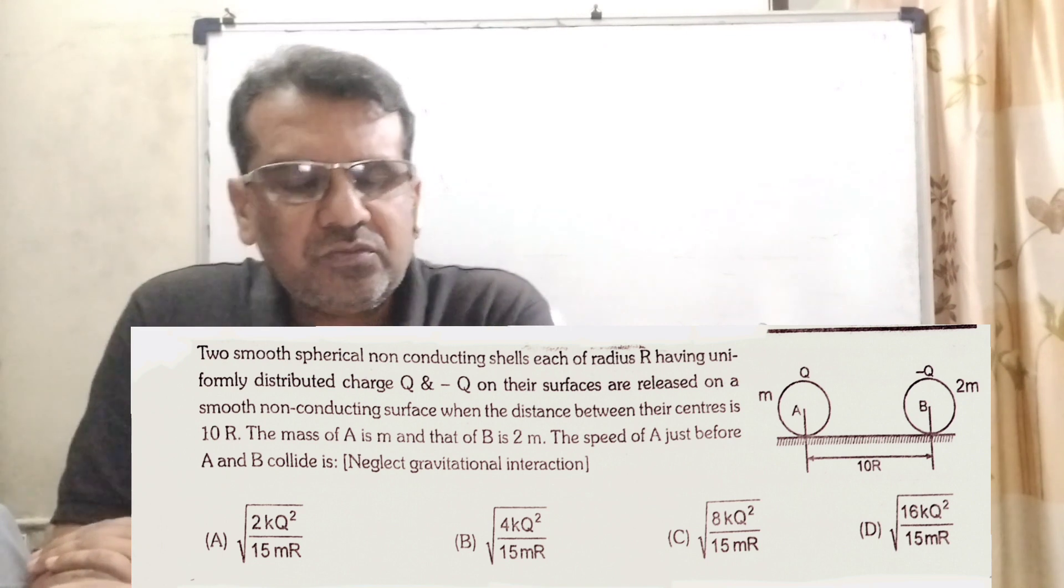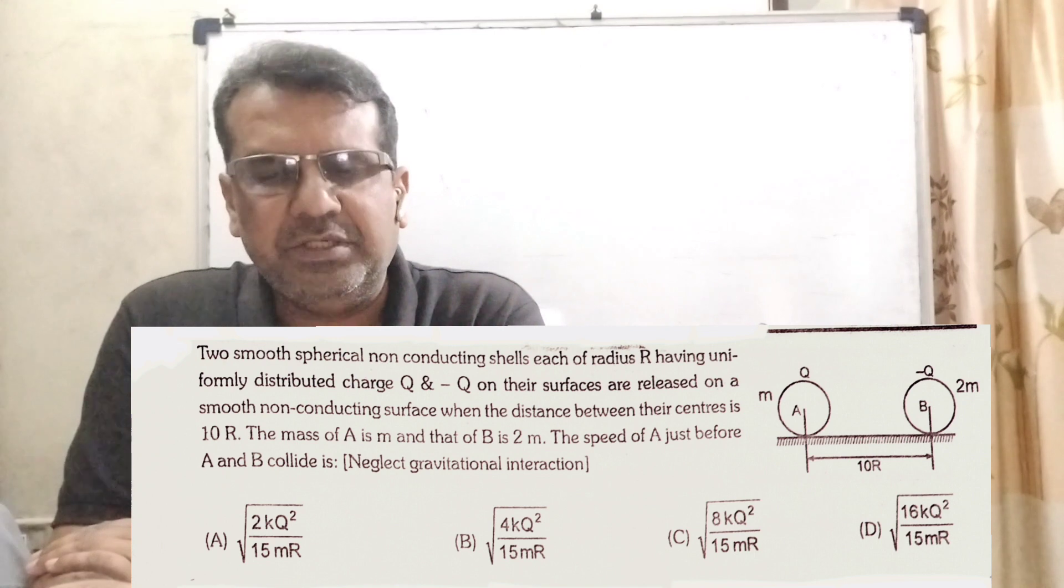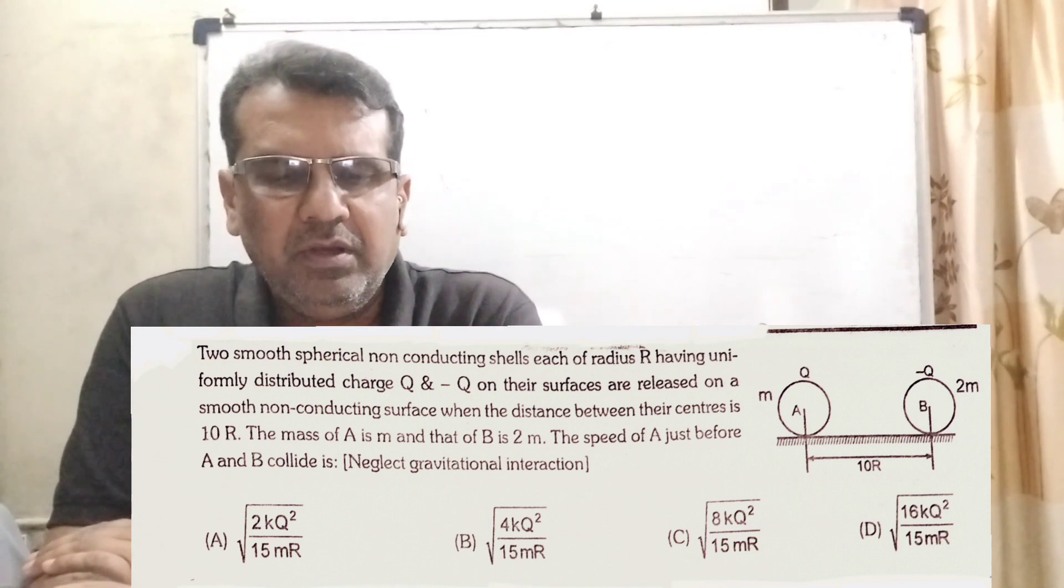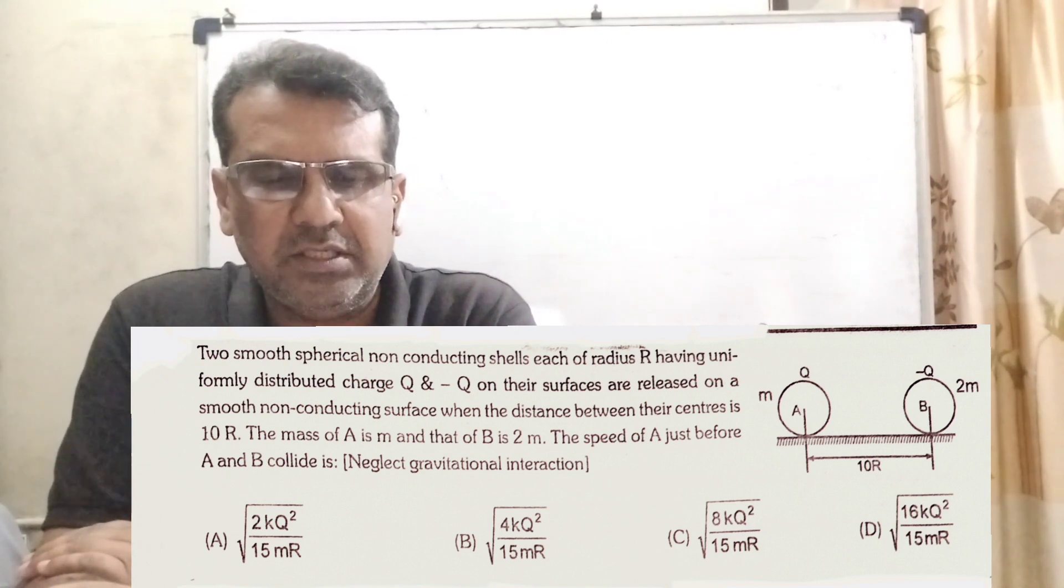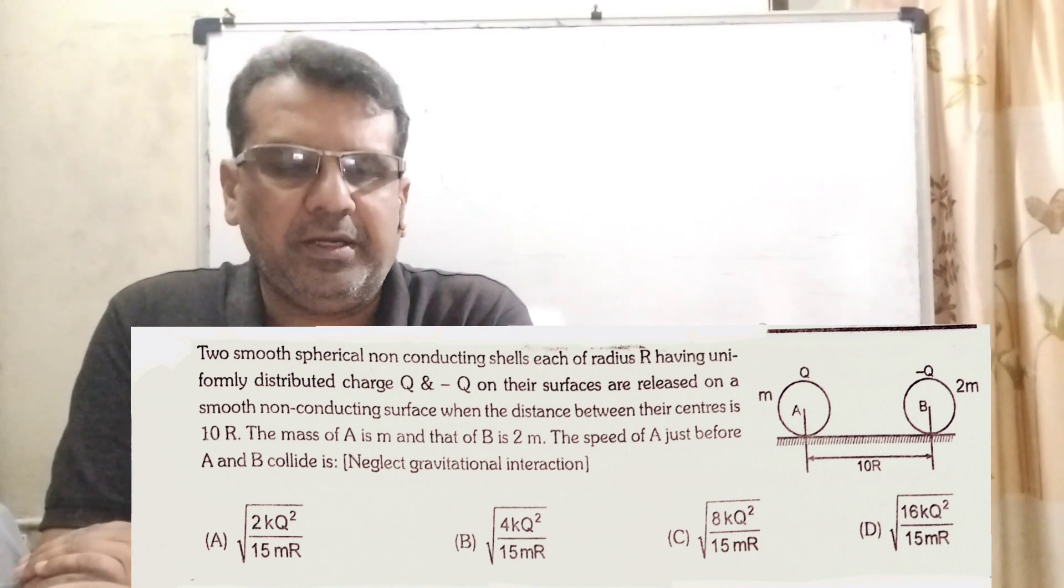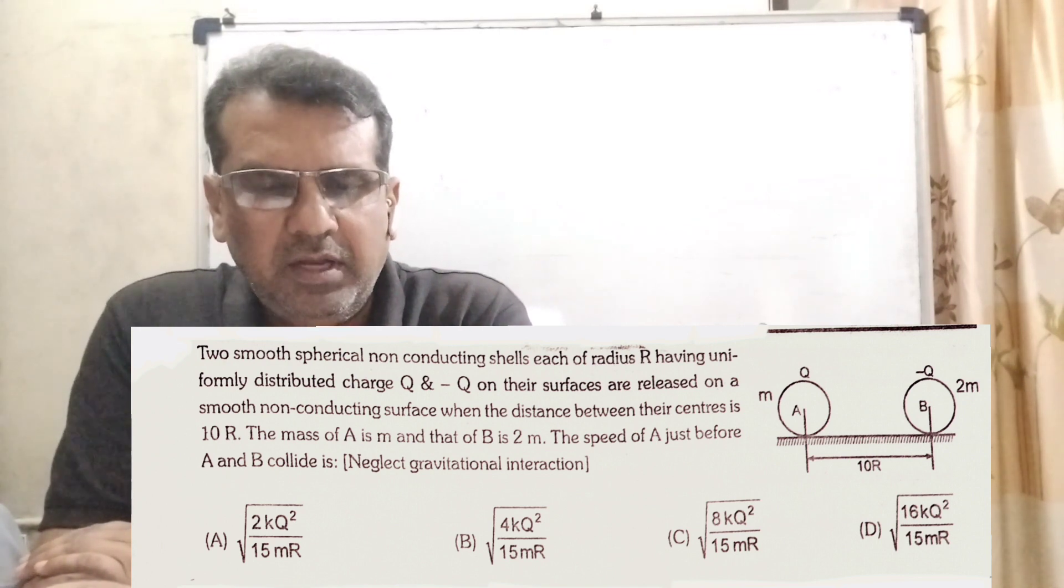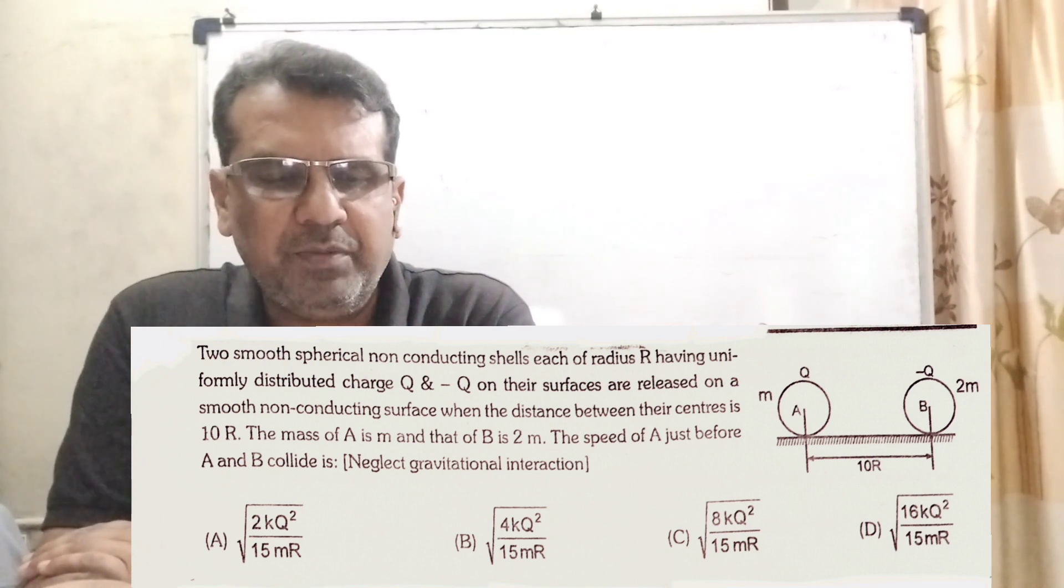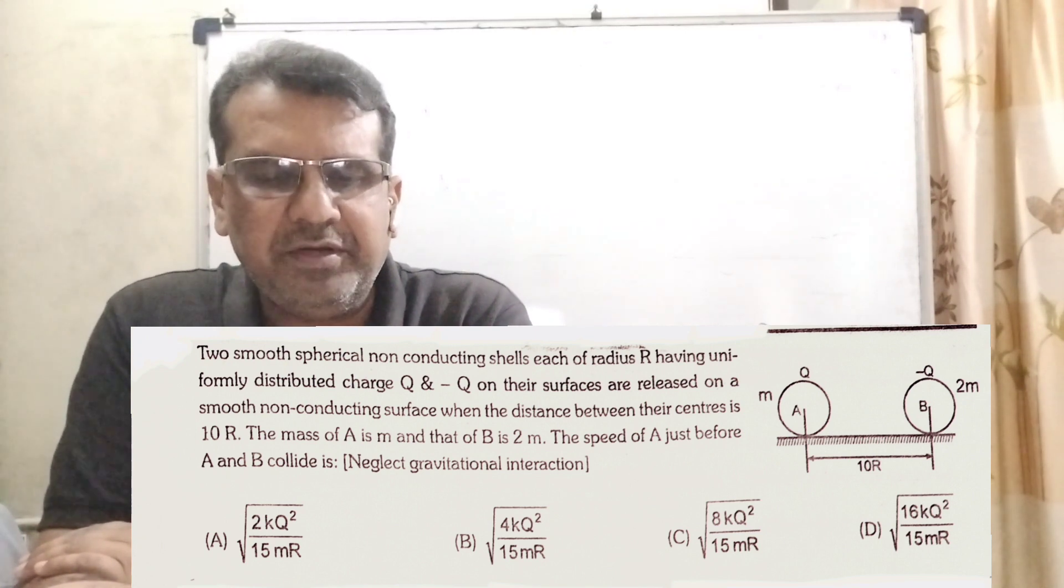Now here is the question. Two smooth spherical non-conducting shells, each of radius capital R, having uniformly distributed charge plus Q and minus Q on the surfaces are released on a smooth non-conducting surface when the distance between their centers is 10R. The mass of A is small m and that of B is 2m, the speed of A just before A and B collide is. Here neglect gravitational interactions.